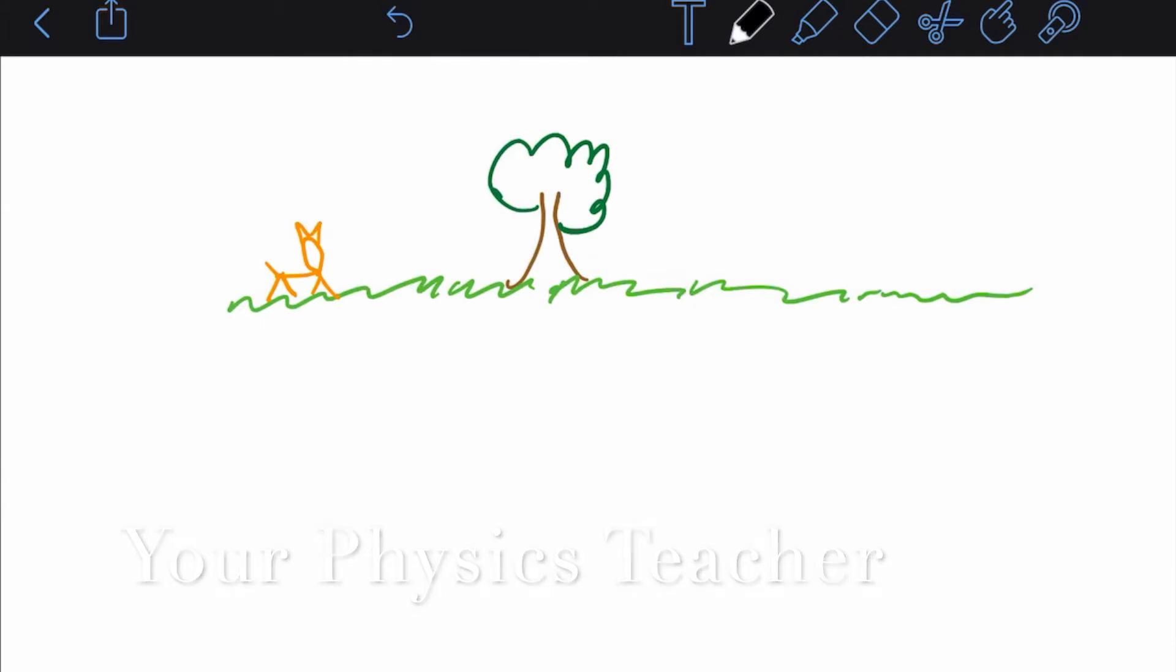Alright, so welcome back. Last time I showed you how to make a position time graph from a motion diagram. So as a quick recap, here we have a cheetah along some grassland and a tree.